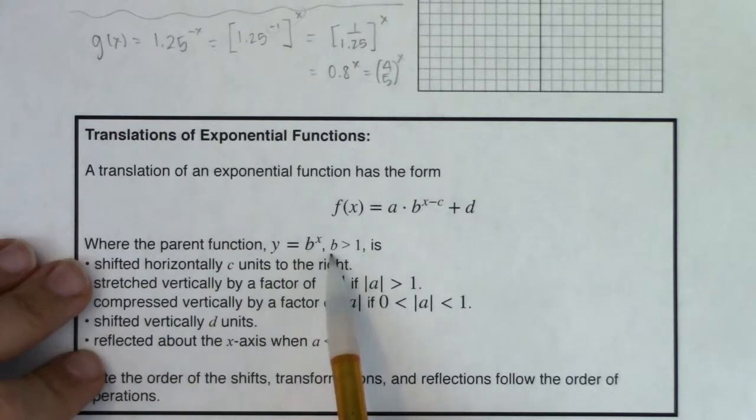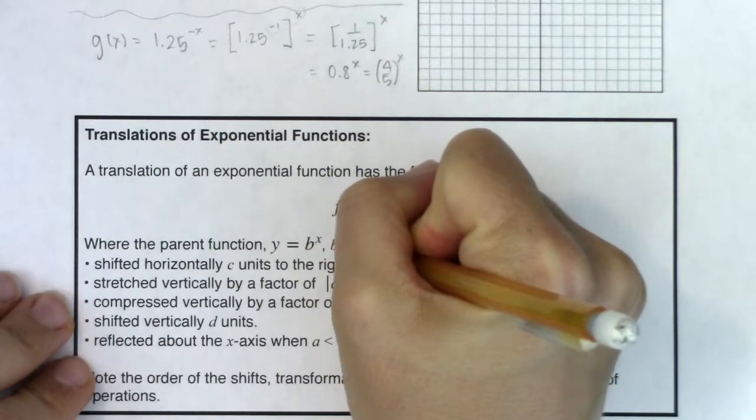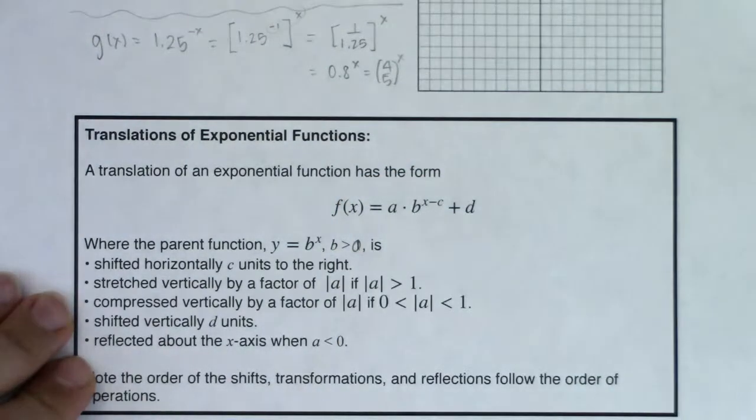So when we start with b to the x, where b is greater than one, or I should say greater than zero, this should technically be greater than zero. There we go, greater than zero.